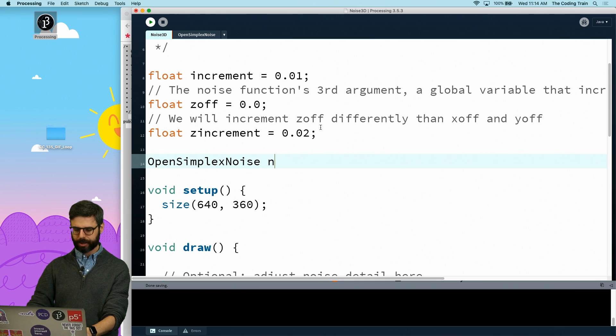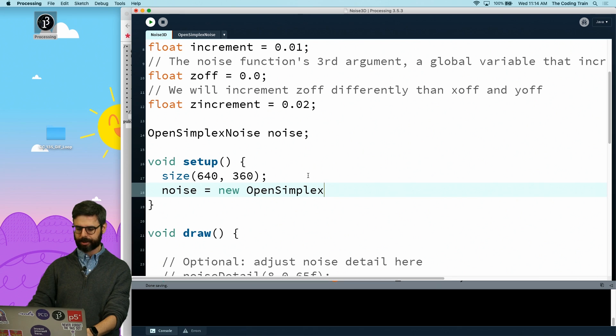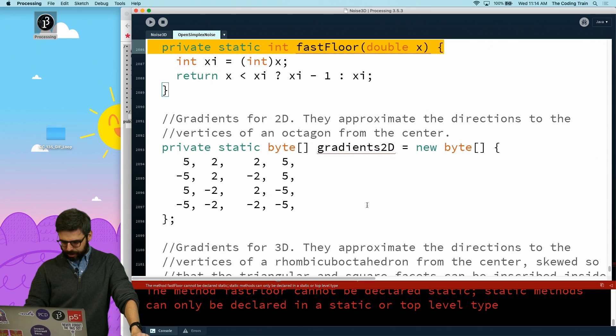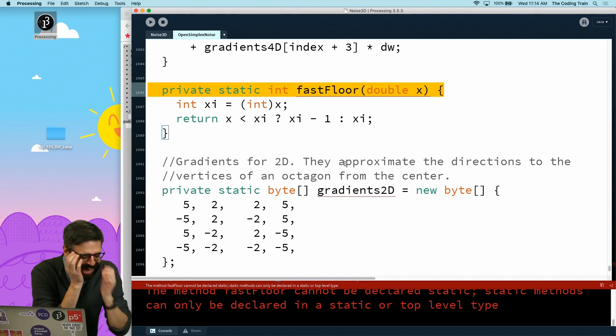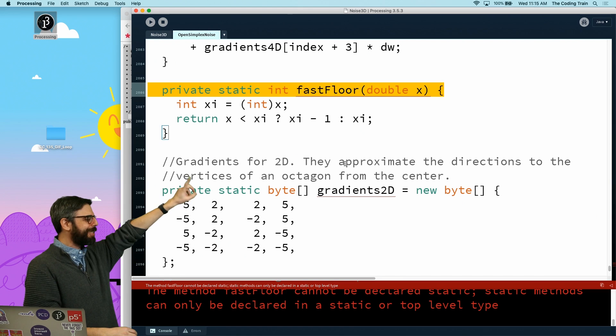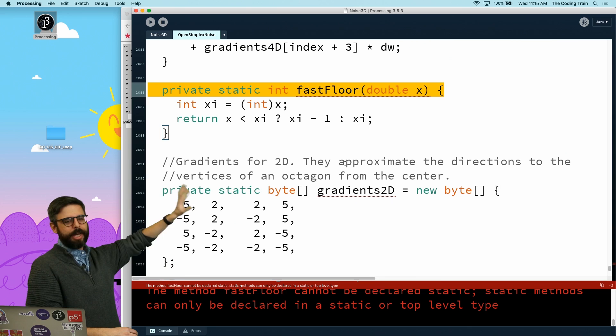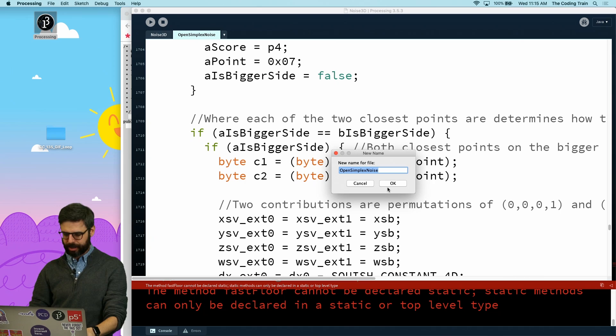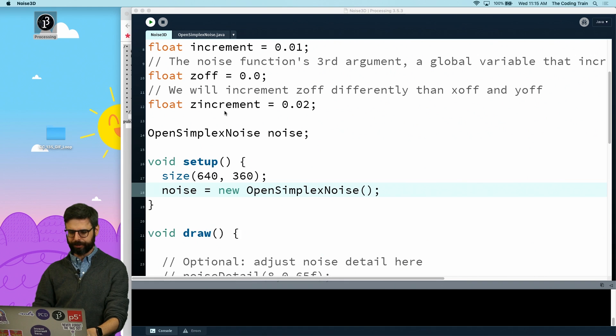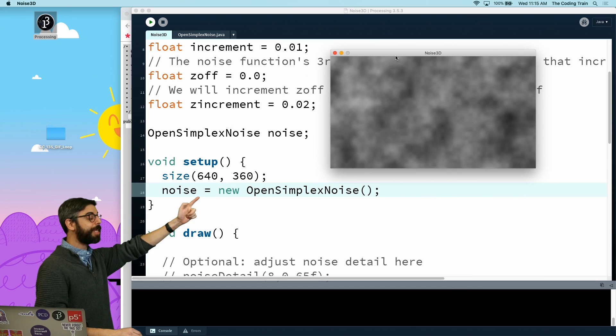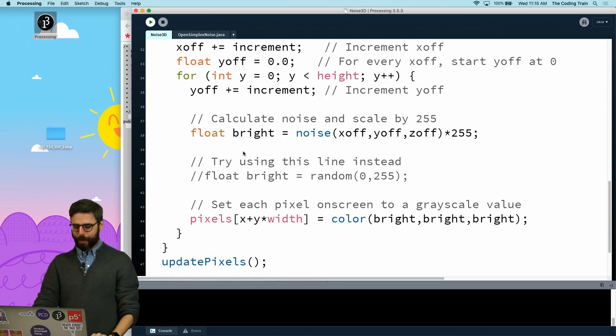So now we're going to change this over. The first thing that I'm going to do is I am going to create an object called OpenSimplex noise. Just call it noise. I'm going to say noise equals a new OpenSimplex noise object. And I'm just going to run this to make sure I'm not getting any errors. I am getting errors. Oh, weird. You can't have static functions in a class inside Processing. It has to do with things being internal classes. So what I'm going to do, let's try renaming this to OpenSimplex noise dot Java. I think that will fix that issue. Great. So no errors.